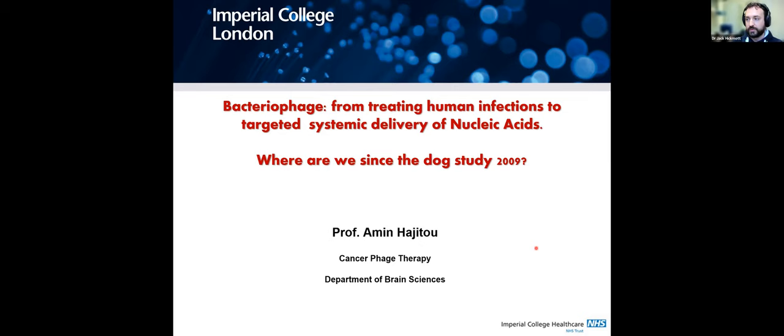Now to introduce today's speaker, Professor Amin Ajito. He completed his PhD at the University of Liège in Belgium, where he acquired extensive experience in gene delivery technologies using eukaryotic viral vectors. He then completed his postdoctoral training at the world-leading MD Anderson Cancer Center in Texas, USA, where he gained expertise in bacteriophage-guided gene delivery and phage display technologies in vitro and in vivo. Importantly, he designed a novel hybrid phage vector for targeted gene transfer.